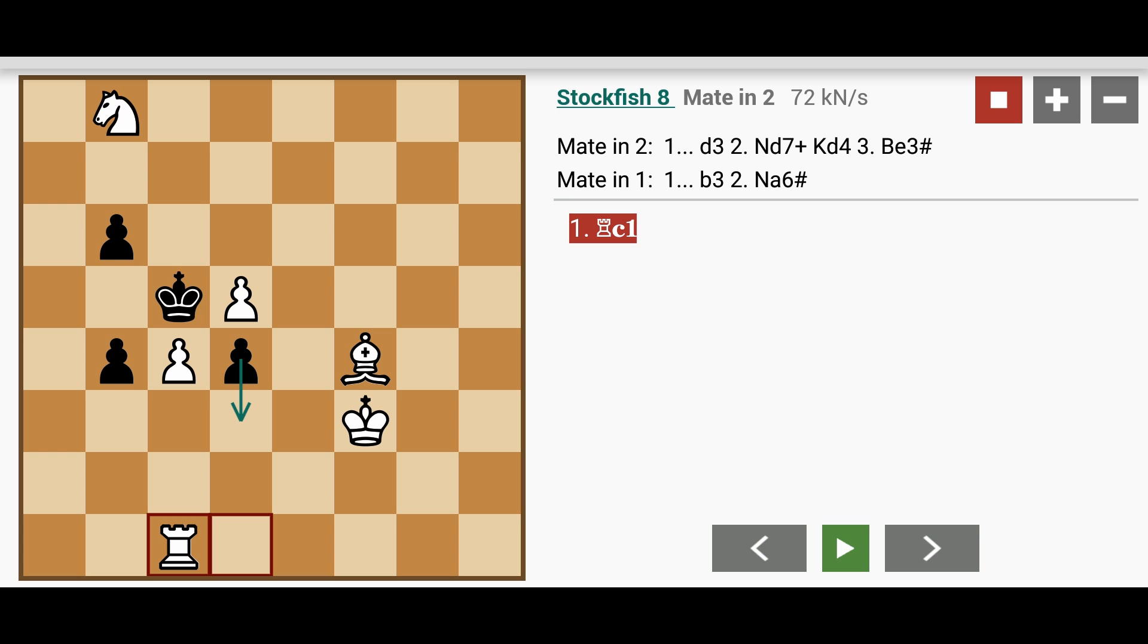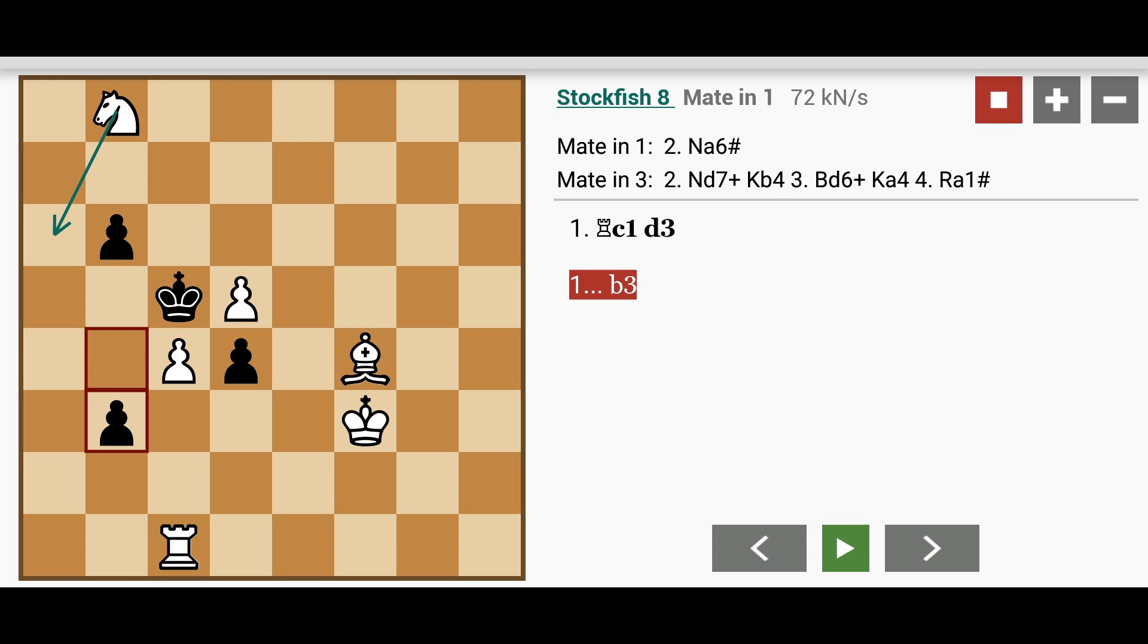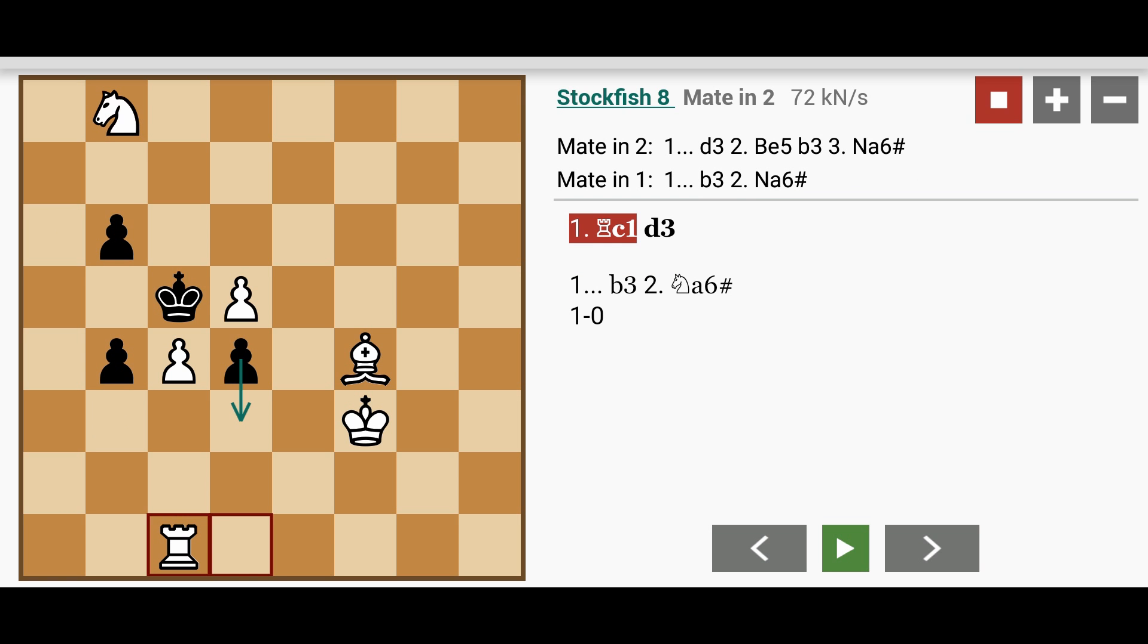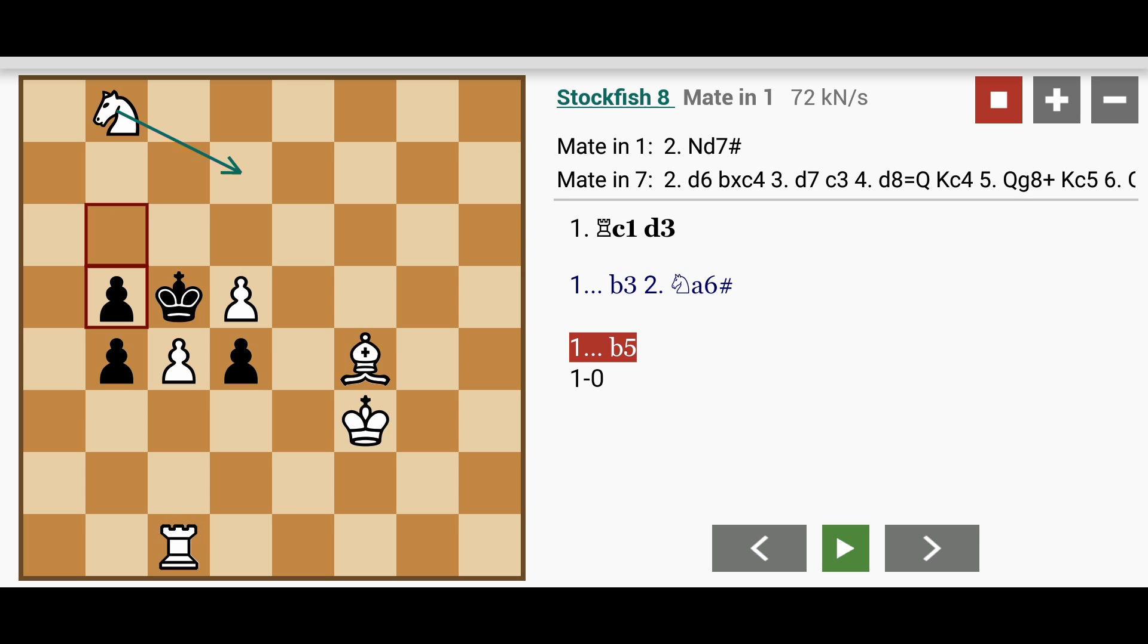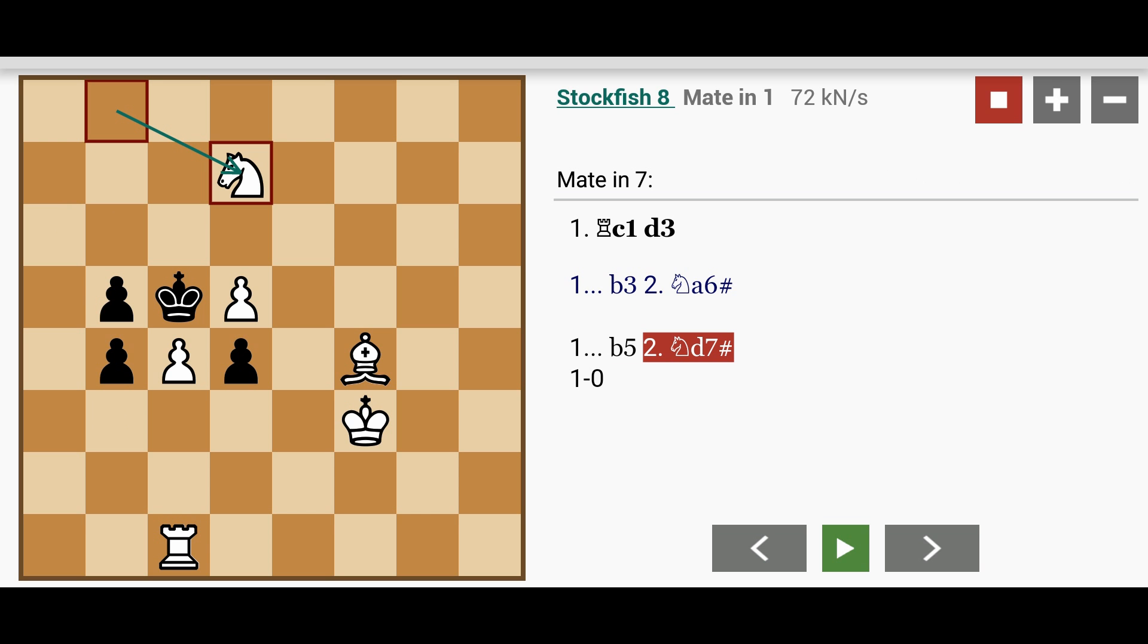Now as you can see, the suggested move here is d3. This prolongs the mate a little bit. But what will happen if b3 was played? Then white checkmates with knight to a6. And if b5 was played, then white can win with knight to d7. Because the square on b6 also needs to be guarded, so knight to a6 would not work in this variation.